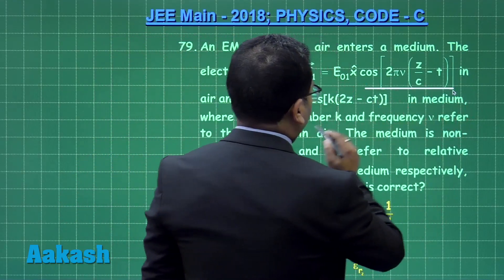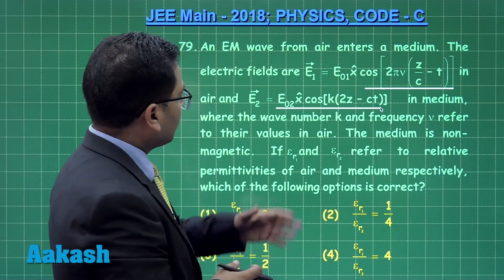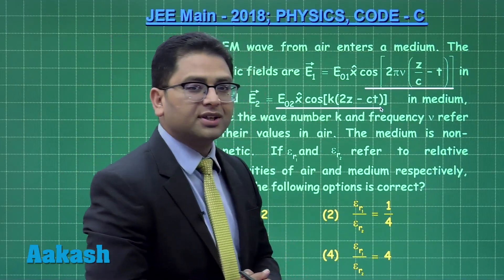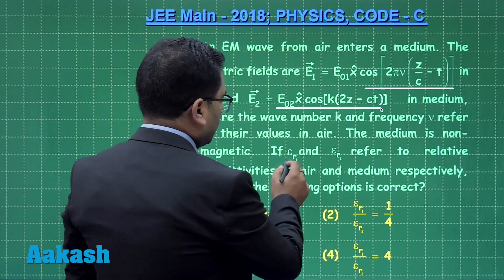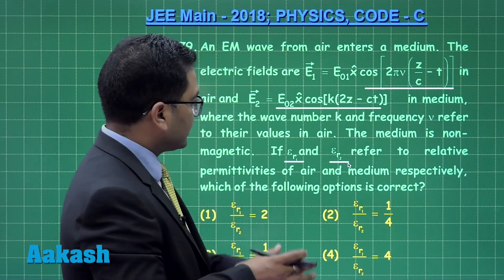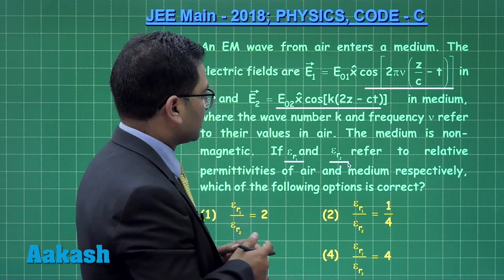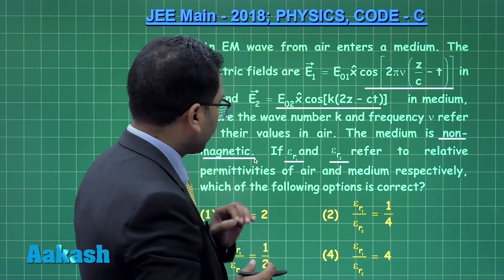This is the electric field in air, and this is the electric field in medium. The wave number k and frequency ν refer to their values in air. An important point is that the medium is non-magnetic.